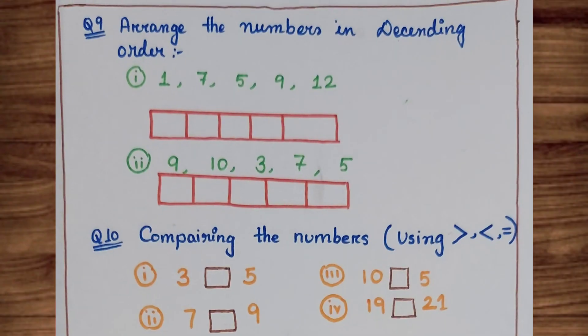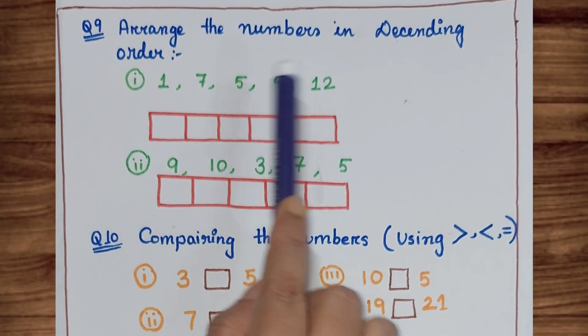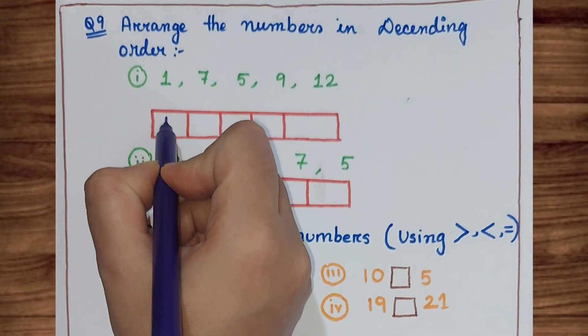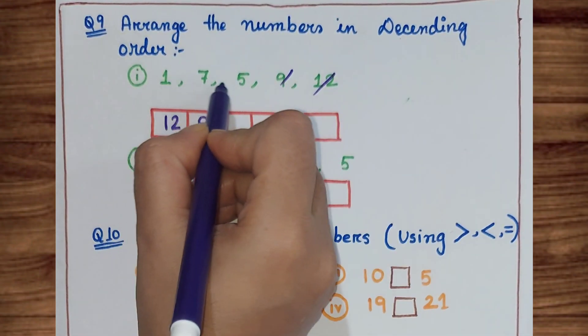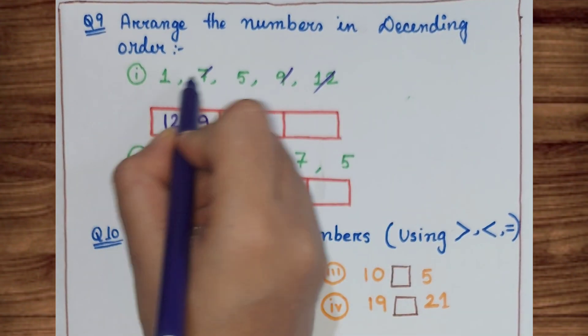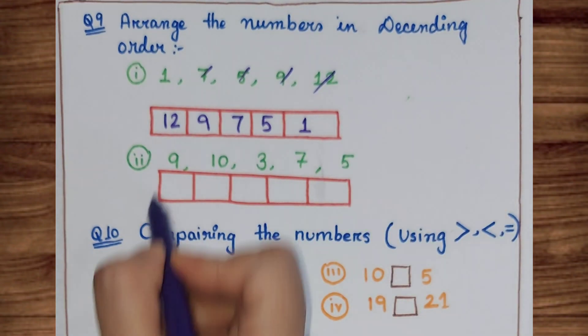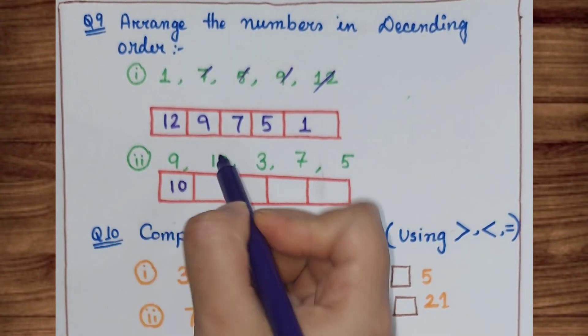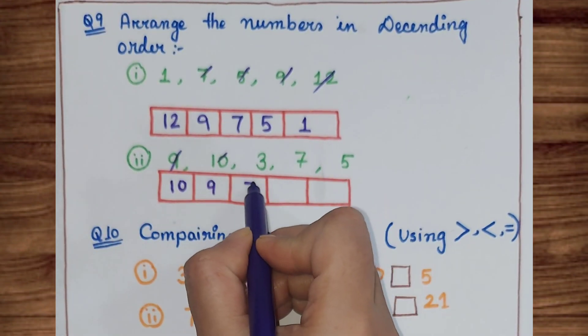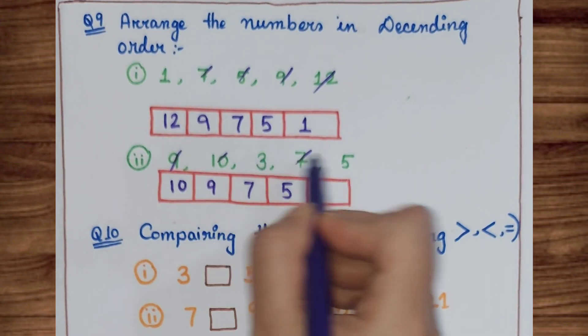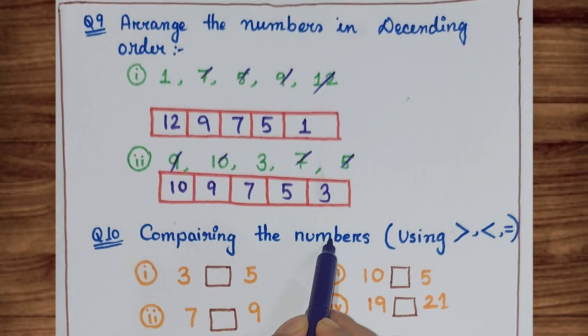Next, arrange the numbers in descending order. Descending means big number to small. Big number to small.